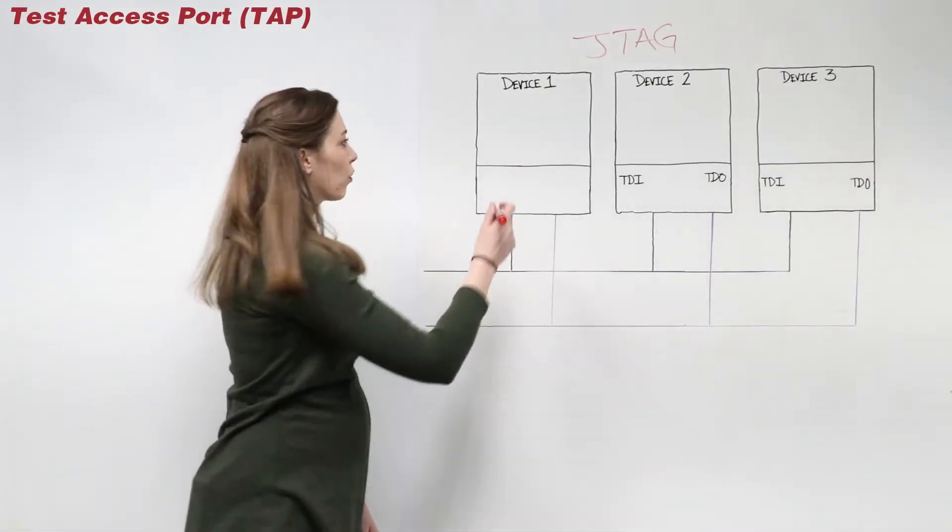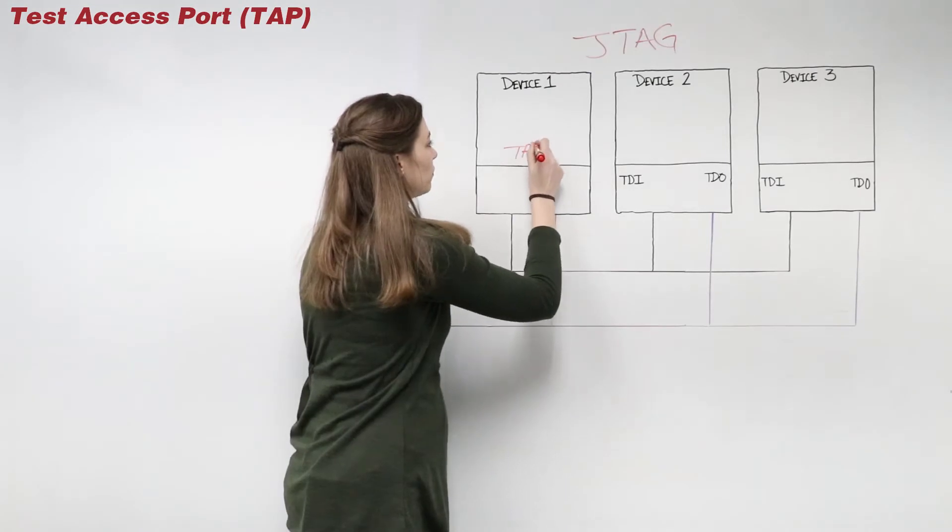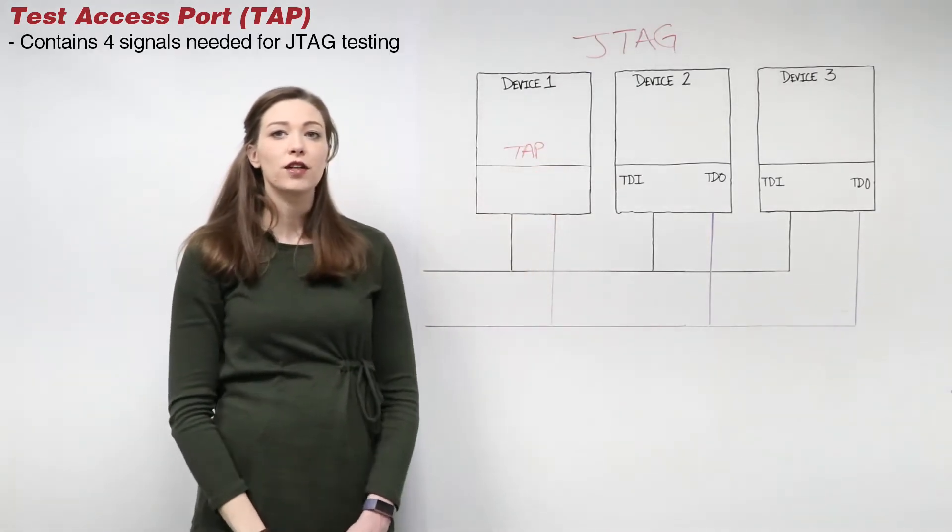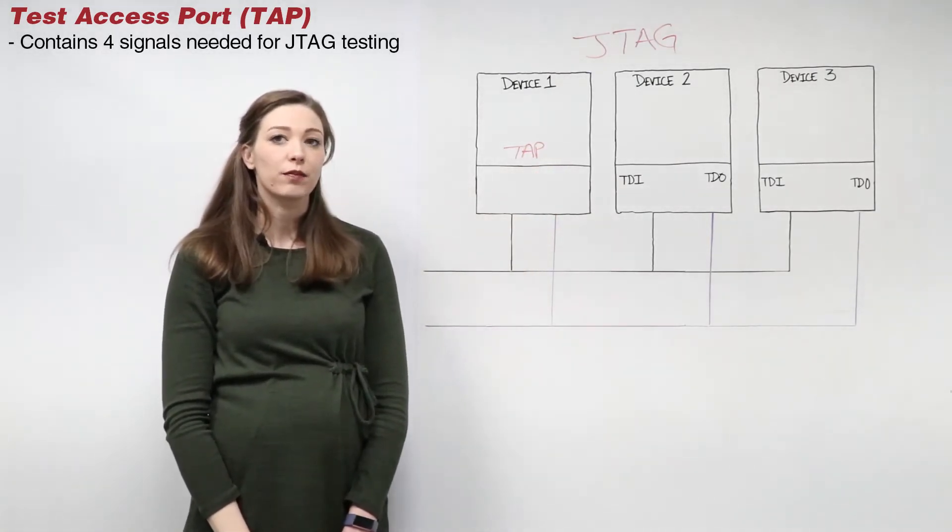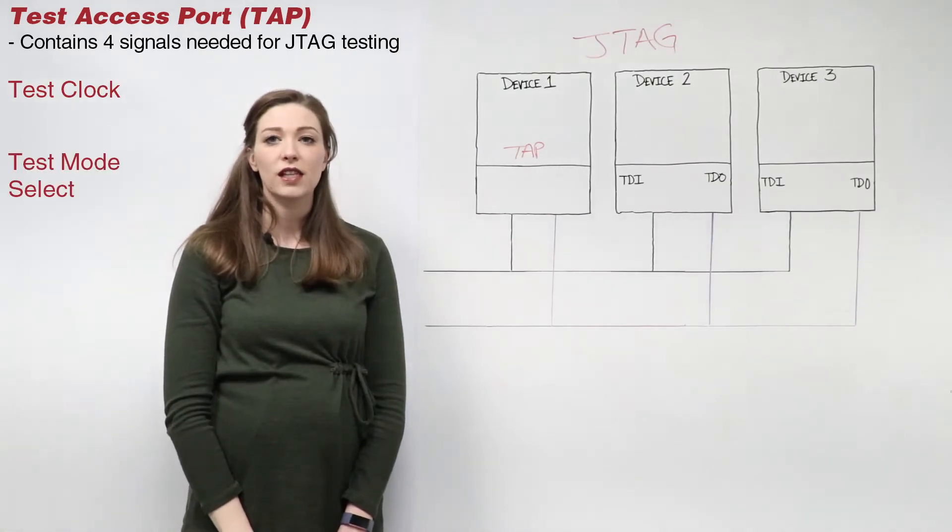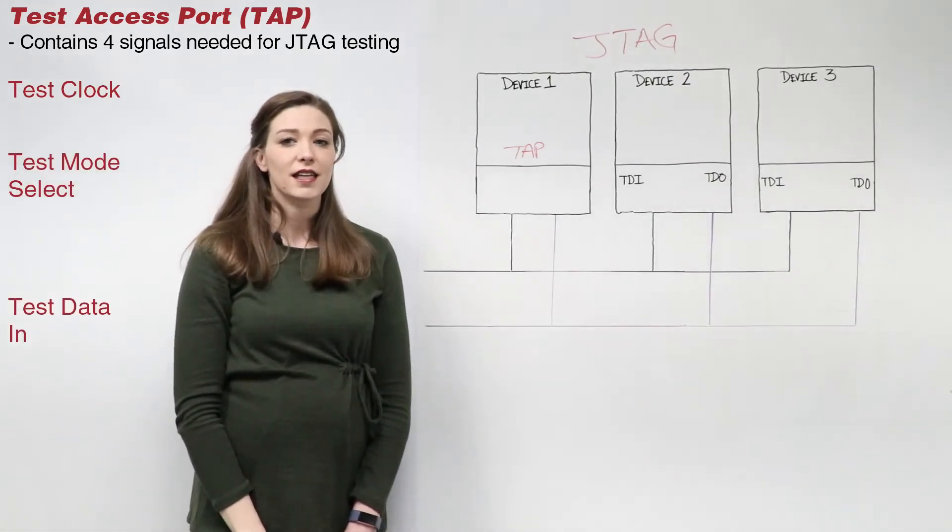The test access port, or TAP, consists of four signals needed for JTAG testing: test clock, test mode select, test data in, and test data out.